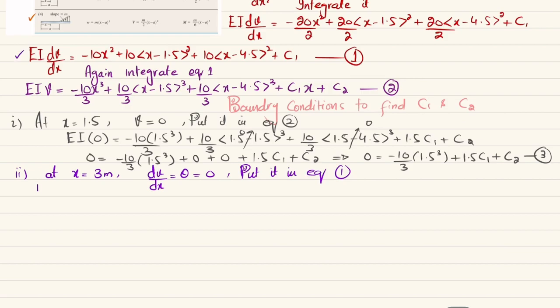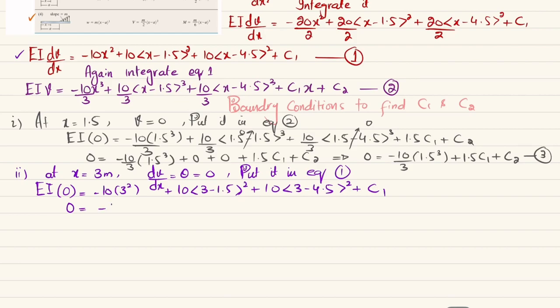Second boundary condition: due to the loading, the beam bends symmetrically, and at x = 3 m the slope dv/dx = 0. Substituting into Equation 1: EI(0) = −10(3²) + 10(3 − 1.5)² + 10⟨3 − 4.5⟩² + C₁. The last Macaulay bracket is negative, so it equals zero. Thus: 0 = −90 + 10(2.25) + C₁, giving C₁ = 67.5.